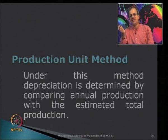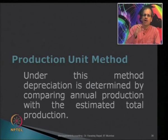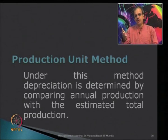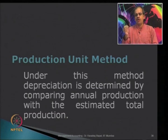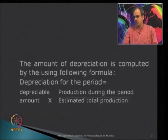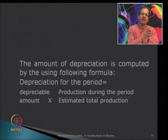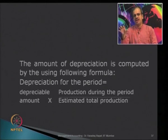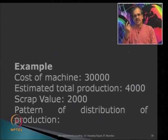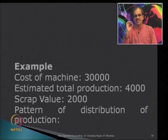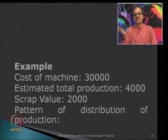There is one more similar method based on production units. Here we calculate the number of units for which the machine is used and the output it produces. Depreciation is calculated as the depreciable amount multiplied by production during the period, divided by the estimated total production. For example, the cost of a machine is 30,000, estimated total production over its useful life is 4,000 units, and scrap value is 2,000.